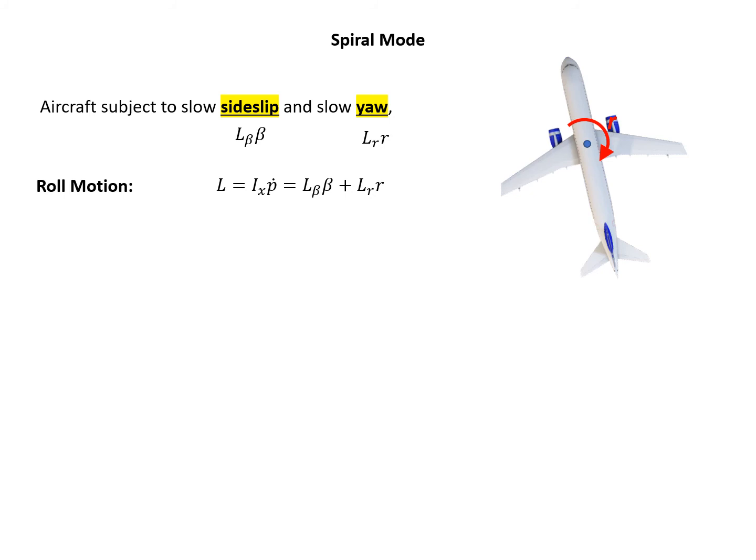First, let's look at the roll motion. For roll motion, sideslip will contribute and yaw will also contribute. Sideslip has L beta times beta, where beta is the sideslip angle. Yaw is contributed through Lr times r, that's a yawing rate r. Again, Newton's second law, the rolling moment L equals Ix times p dot. This equals L beta times beta plus Lr times r, and we assume it's zero because this aircraft only subjects to slow sideslip and slow yaw, there's no roll, so the roll contribution is zero. Now we can write down beta, the sideslip angle.